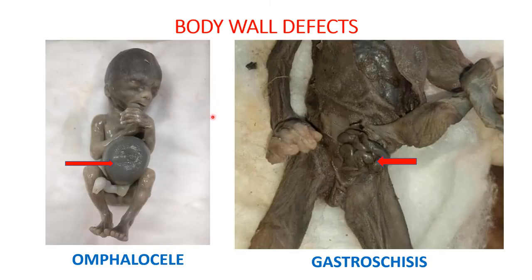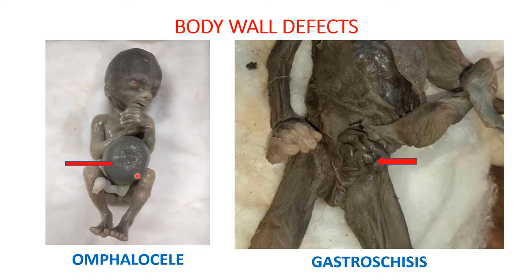We begin with the body wall defects. The first picture is the same one shown during the introduction of our lecture — a primigravida female complaining of no fetal movements, with an ultrasound showing an anterior abdominal wall defect with herniated loops. This is a case of a body wall defect called omphalocele, where the abdominal contents have herniated through a defect in the anterior abdominal wall.